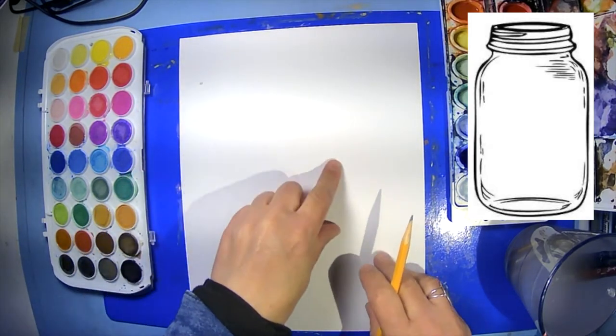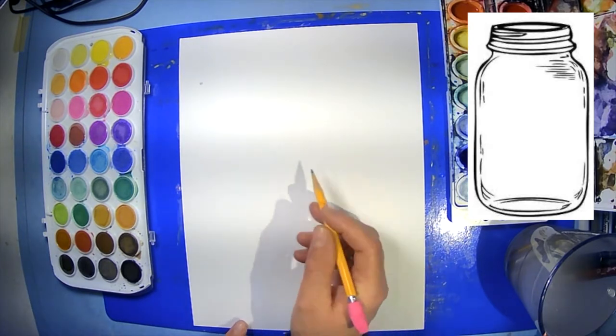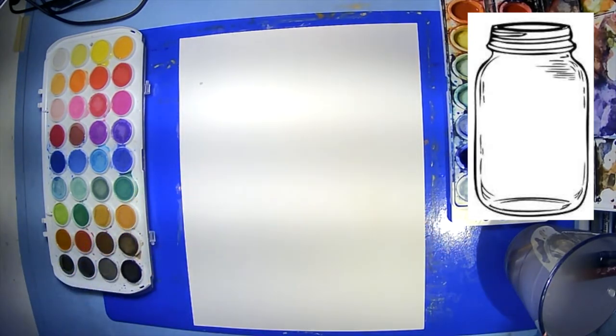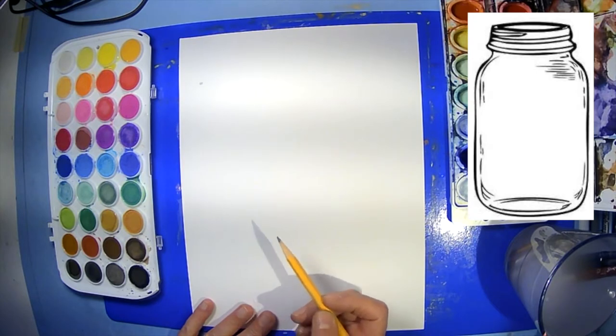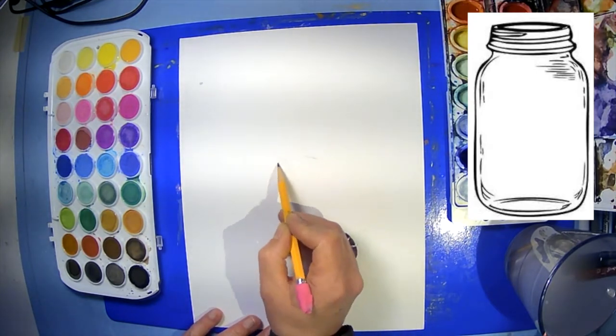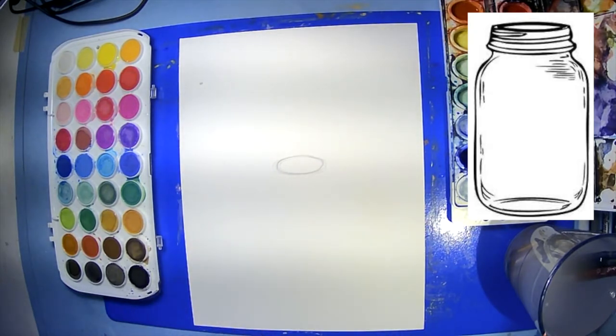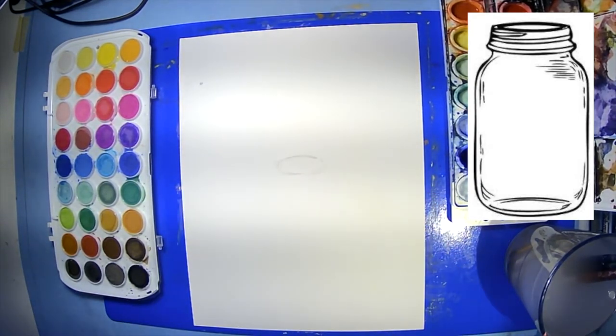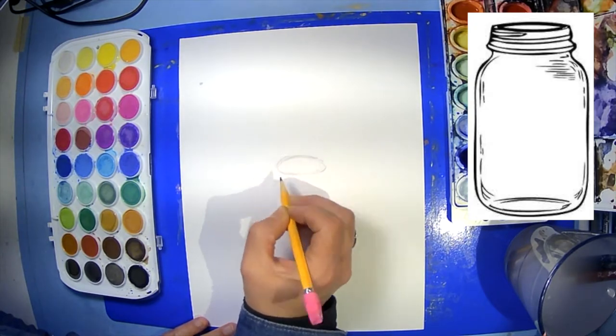So boys and girls, to make a jar or a vase, you're going to want to draw a circular shape but it's flatter and it's called an ellipse. It looks like an oval. It doesn't have to be perfect. So maybe in the center here I'm just going to go around and try to make an oval. It doesn't have to be perfect. You can erase parts of it, but I'm just going to make this oval first.